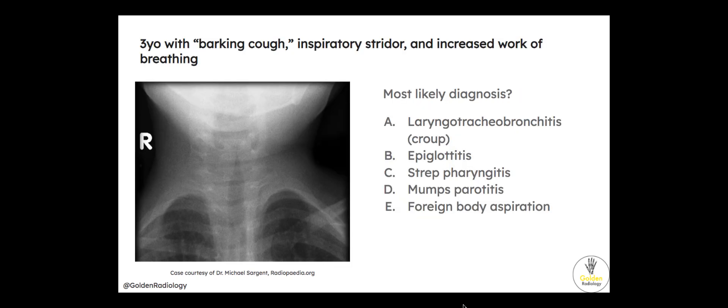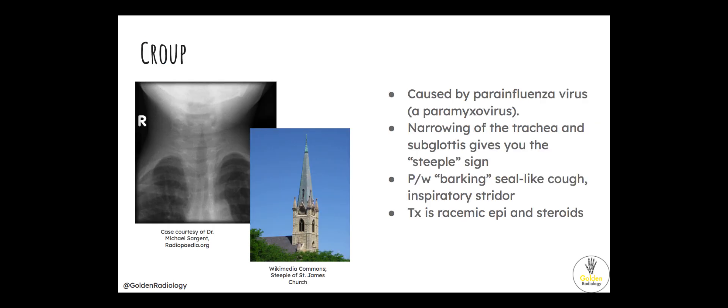Three-year-old with barking cough, inspiratory stridor, and increased work of breathing — most likely diagnosis? Croup, epiglottitis, strep pharyngitis, mumps, peritonitis, or foreign body aspiration? This is croup. Croup is caused by parainfluenza virus, which is a paramyxovirus. It causes narrowing of the trachea and gives you the steeple appearance on imaging. It presents with a barking, seal-like cough and inspiratory stridor. Treatment is racemic epinephrine and steroids.